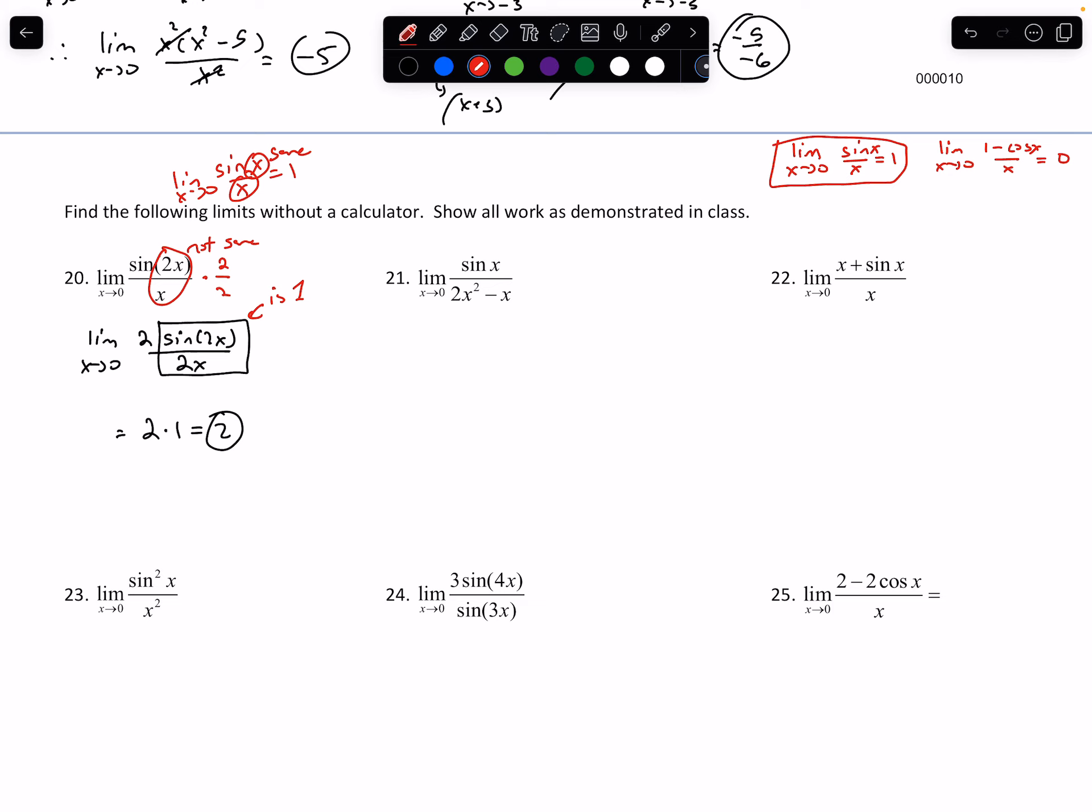For the next one, same thing, except for here, I am going to get 0 on top and 0 on bottom. So again, this is our indeterminate. Now it doesn't look like our rule. However, there is a corollary to this rule. If I flip it, what do you think would happen if I made it x over sine of x? What do you suppose that's going to be? Well, we can just use algebra. The top is really 1 over 1. If I flip here, I flip here. And same thing, we're just going to get 1. So there's our answer.